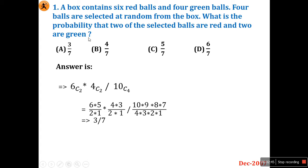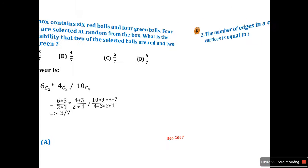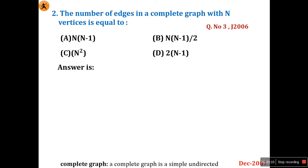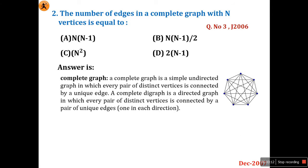The total probability to get two red balls and two green balls is 3/7. It's a simple question if you know basic probability theory. Now moving to question number two: the number of edges in a complete graph with n vertices is equal to? This same question was asked in June 2006 question number three.